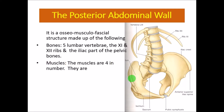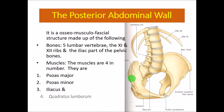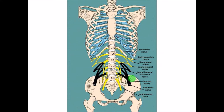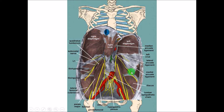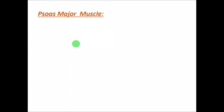There are four muscles forming the posterior abdominal wall: the psoas major, psoas minor, iliacus, and quadratus lumborum. Here you can see the psoas major — this big muscle — and in front of it the smaller psoas minor, then the iliacus, and the quadratus lumborum.